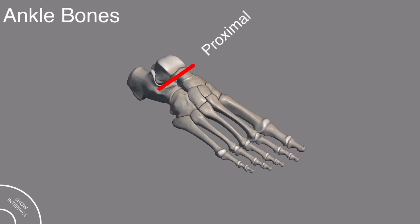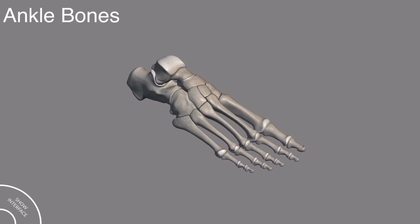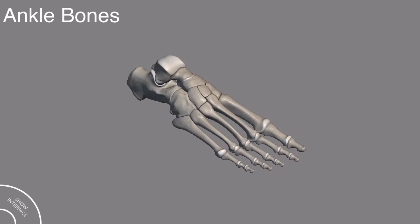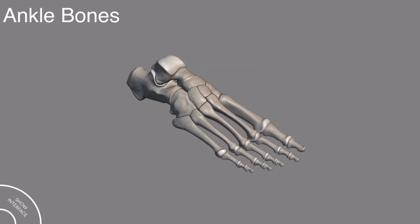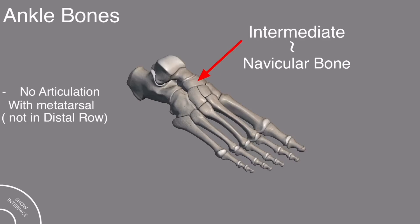Between the proximal and the distal row, there is one bone called the intermediate bone. This bone, which lies between the proximal and the distal row, is called the navicular bone. The bones of the distal row articulate with the metatarsal. Since the navicular bone does not articulate with the metatarsal, that's why it is not included in the distal row.